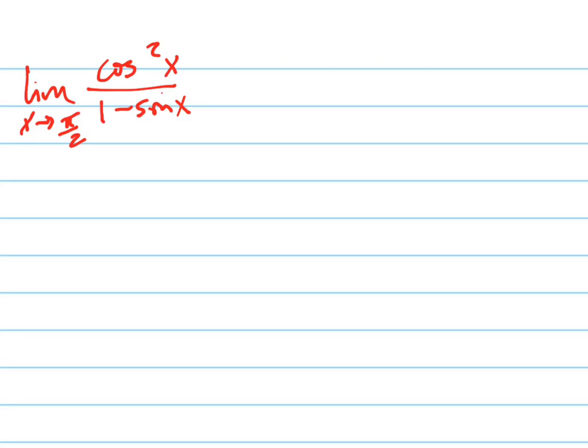Let's find the limit as x goes to pi over 2 of cosine squared x over 1 minus sine x. As a math person, my first instinct is to say, let's just plug in pi over 2 to here and to here.